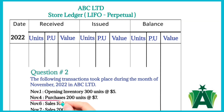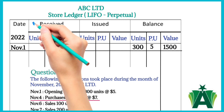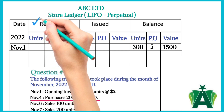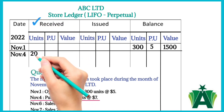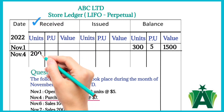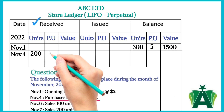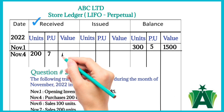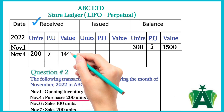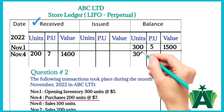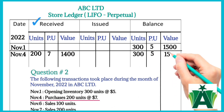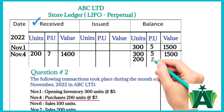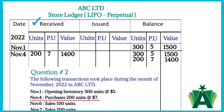November 4th: purchase of 200 units at $7 per unit. This transaction will be recorded in the received column — 200 units at $7 per unit, with a total value of $1,400. In the balance column, the November 1st balance is recorded first, then the November 4th balance is recorded.